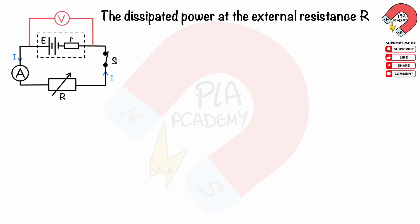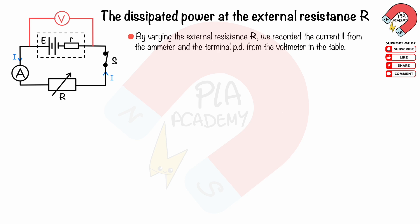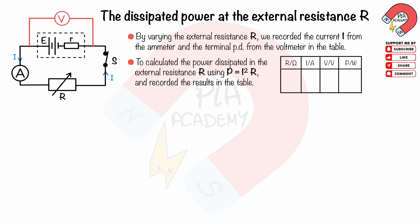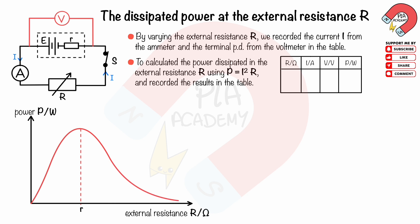The dissipated power at the external resistance R. From the previous experiment, by varying the external resistance R, we record the current I from the ammeter and the terminal PD V from the voltmeter. We calculate the power dissipated in the external resistance R using P equals I squared R, and record the results in the table. We then plot the graph of dissipated power P against external resistance R, as shown. The power output from the source depends on both the internal resistance and the external resistance R. The graph shows how the power output varies, and we see that there is a maximum power output when the external resistance equals the internal resistance.